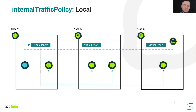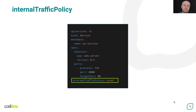Besides external traffic policy, there's another option called internal traffic policy. As you can probably guess, it concerns the configuration of services for requests coming from inside the cluster instead of outside. It also has two configuration modes: the default cluster and local. For example, when set to local for a given service, a request originated from a specific node in the cluster can only be handled by service endpoints running on the same node, if there are any. Otherwise, in practice, it is not possible to consume the service locally on that node, even if it does have endpoints running on other nodes. To use the internal traffic policy option, just add such a field to a given service specification and set it to local or cluster. The cluster value is the default one, so you don't need to specify that explicitly if you want to use that mode.